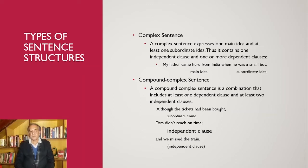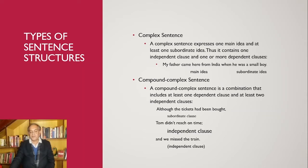The compound-complex sentence is the fourth kind. It is a combination that includes at least one dependent clause and at least two independent clauses. For example: 'Although the tickets had been bought' is the subordinate idea; 'Tom had not reached on time' and 'we missed the train' are the two independent clauses. So the tickets being bought is the subordinate idea while the other two are independent clauses.